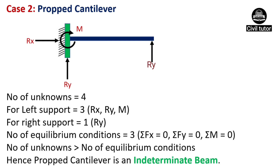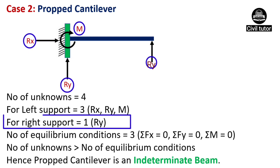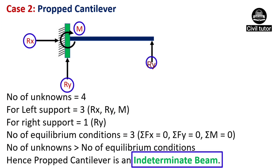Now let's see whether a proper cantilever is a determinate or indeterminate structure. The number of unknowns for a proper cantilever is equal to four — three reactions at the left-end support (Rx, Ry, and M) and one reaction, Ry, at the right-end support. The number of equilibrium conditions is three. So the number of unknowns is greater than the number of equilibrium conditions — hence, proper cantilever is also an indeterminate beam.